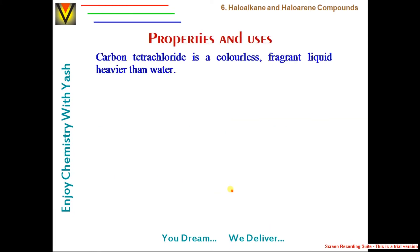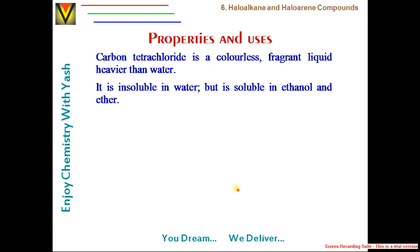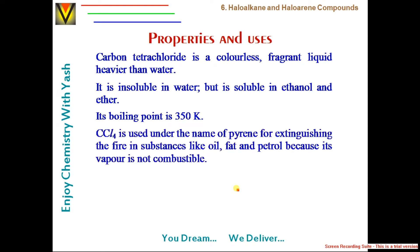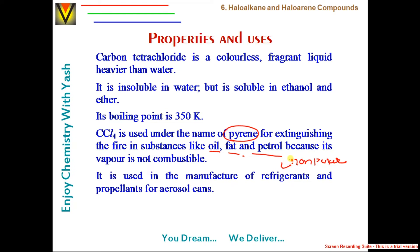Carbon tetrachloride is a colorless, fragrant liquid, heavier than water. It is insoluble in water but soluble in ethanol and ether. Its boiling point is 350 K. CCl₄ is used under the trade name 'pyrene' as a fire extinguisher, particularly effective for non-polar substances like oil, fat, and petrol, which cannot be extinguished with polar water.